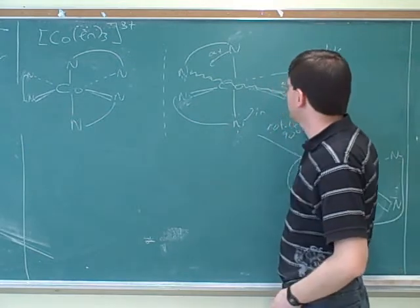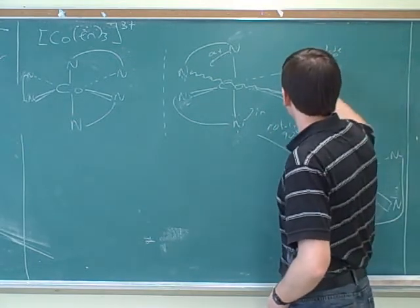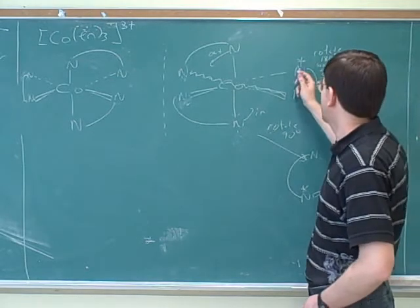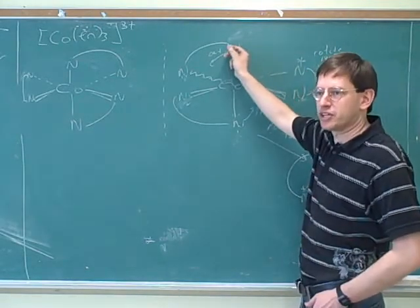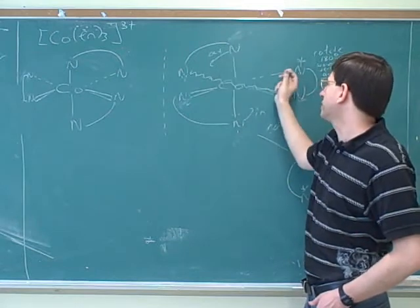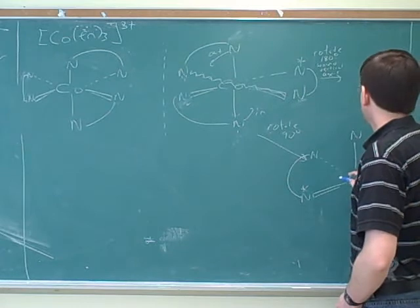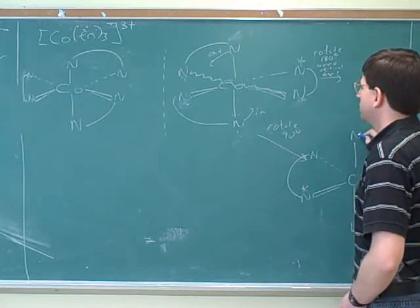Alright. This nitrogen hasn't moved, because it's on the axis. So we have to figure out where this nitrogen is going to go. Well, there's only one space left. But hopefully it makes sense that this is going to rotate 90 degrees up to this position. Since this is going out of the board, it's going to drag this in to replace it.